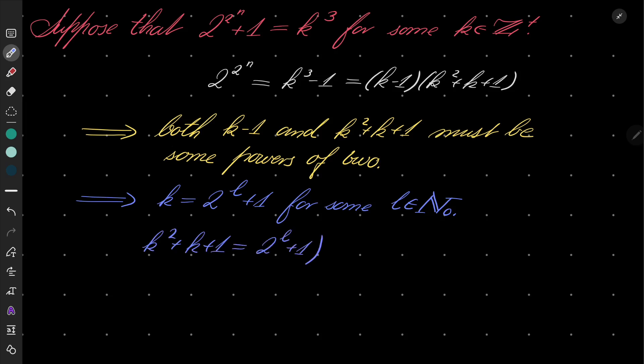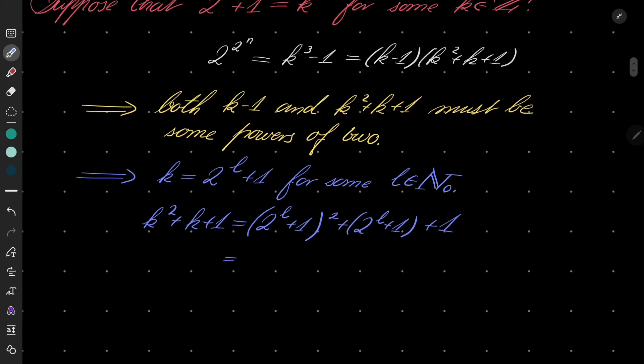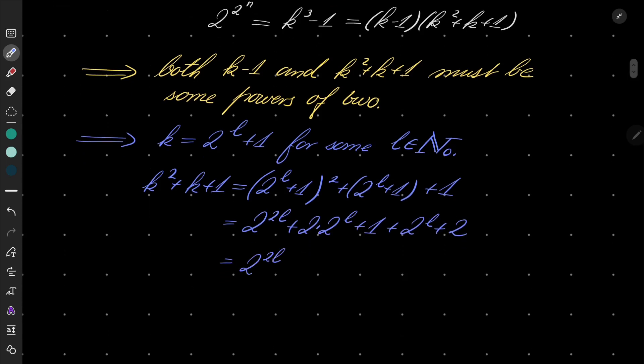k squared plus k plus 1 equals 2 to the power 2l plus 2 times 2 to the power l plus 1 plus 2 to the power l plus 2, and one more step, it's 2 to the power 2l plus 3 times 2 to the power l plus 3.